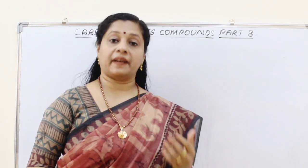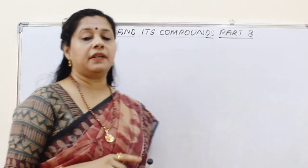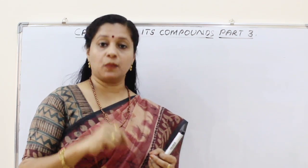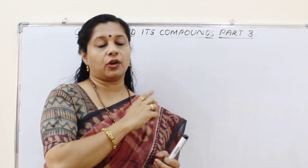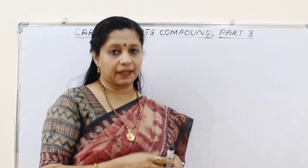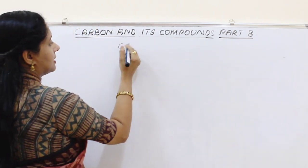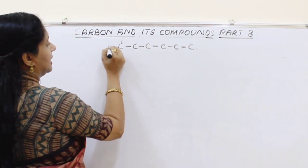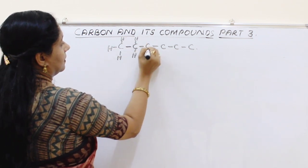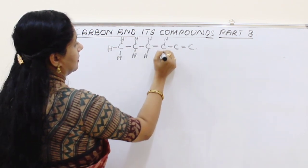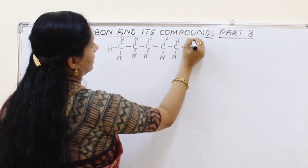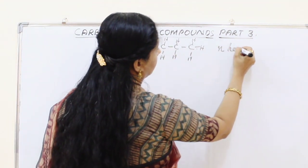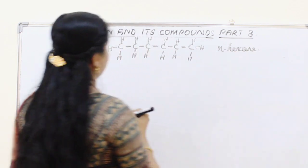Now we will draw the isomers of hexane. Please don't simply watch this video — take a paper and pen and practice with me, then cross-check or take a screenshot to refer to later. The first isomer of hexane is a straight chain of 6 carbons, called n-hexane.